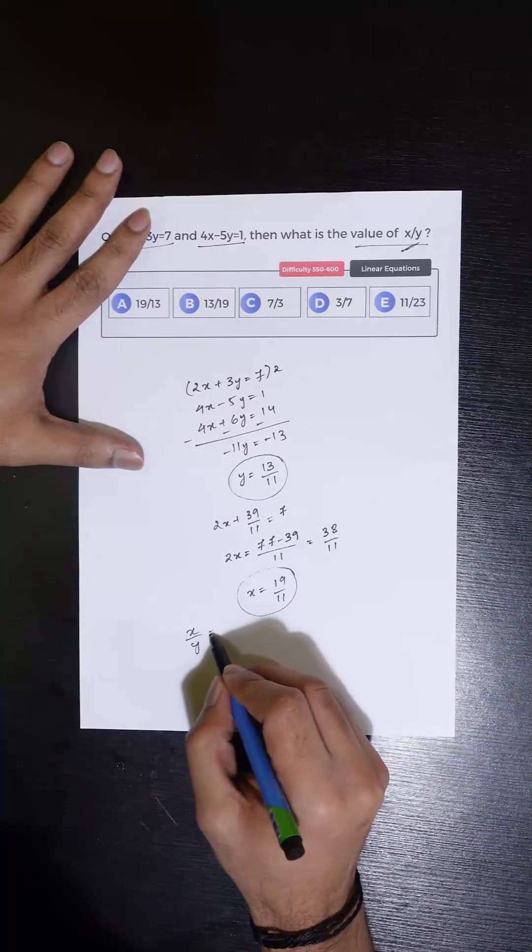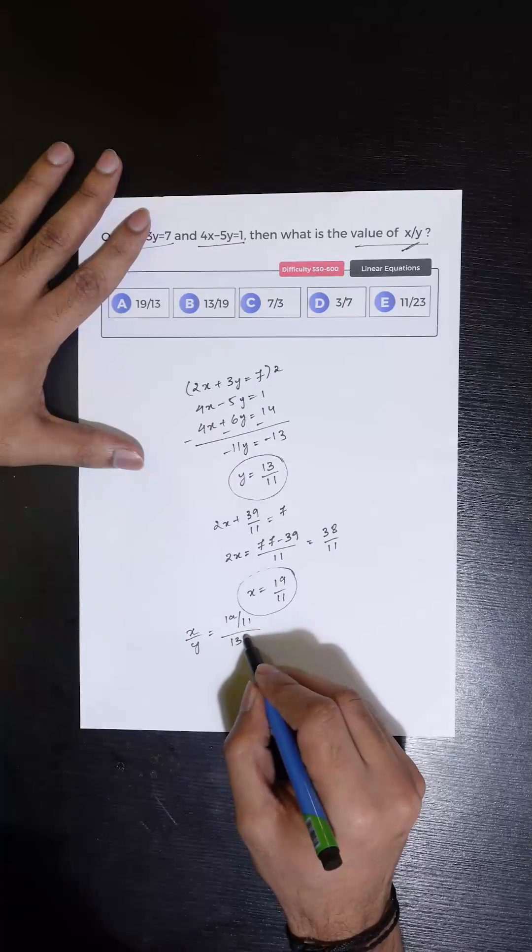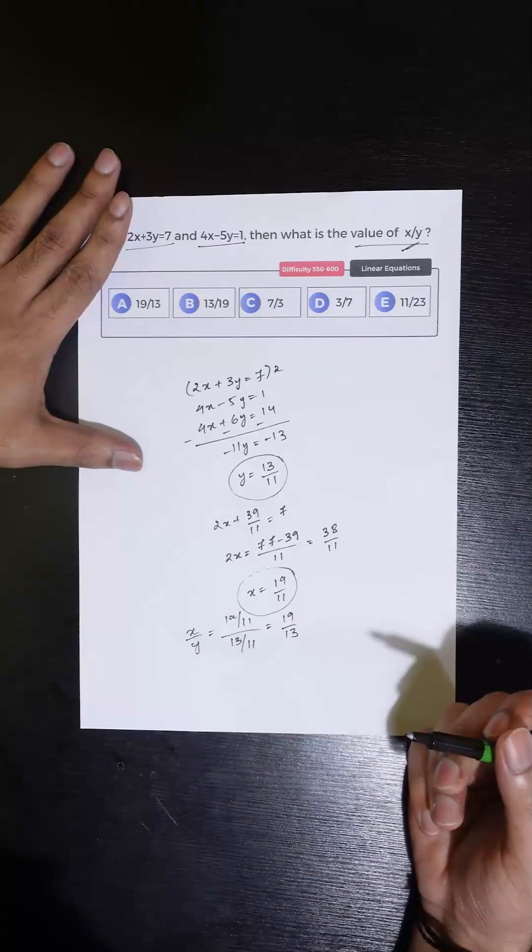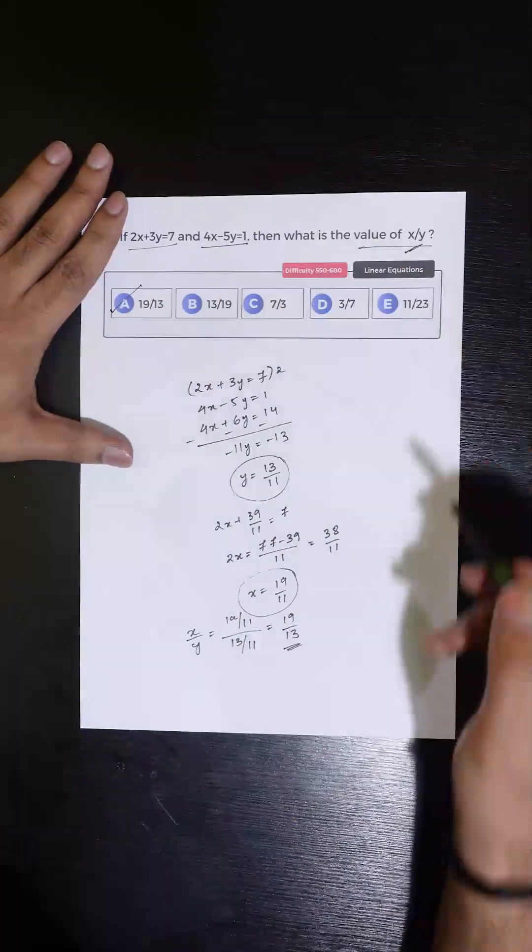We need to calculate the value of x by y, which would be 19 by 11 divided by 13 by 11, which is nothing but 19 by 13. So the value of x by y is 19 by 13, and the correct answer is option C.